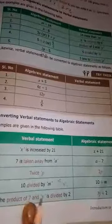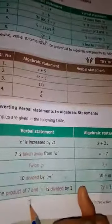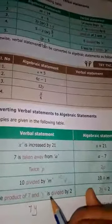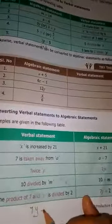First is the product of - product means multiplication. So 7y is divided by 2. This is the algebraic statement. So you can change verbal statements to algebraic statements. Okay children, next.